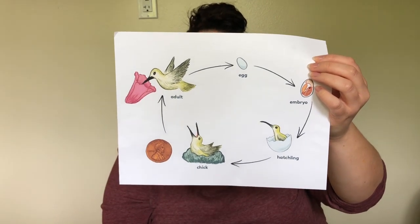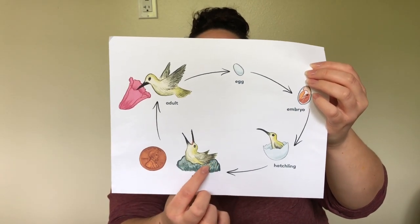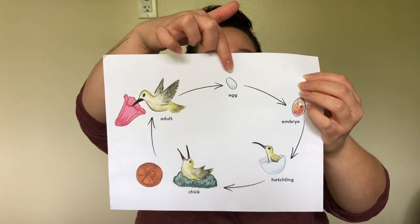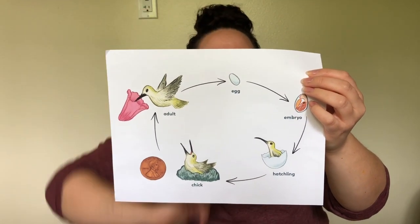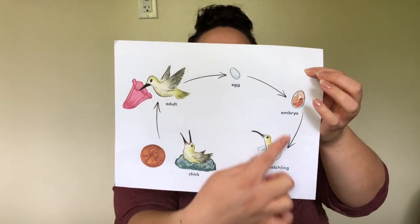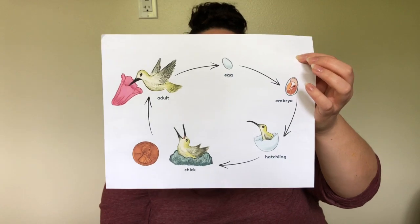So this is the life cycle — it's like a series of changes that happen over the course of a hummingbird's life, from when it's born to when it's an adult. It kind of follows the same pattern throughout its life. Now I want to show you some pictures and talk more about those different stages of the hummingbird's life.